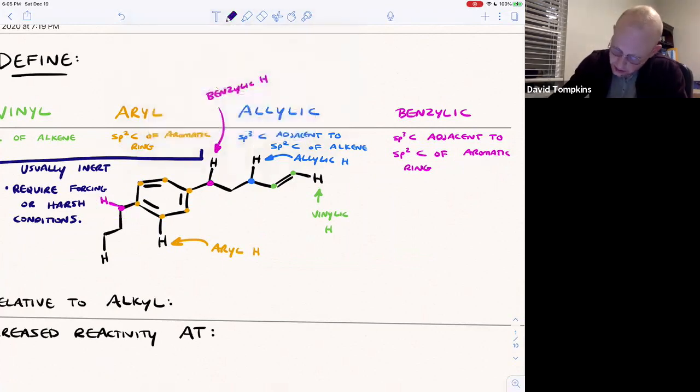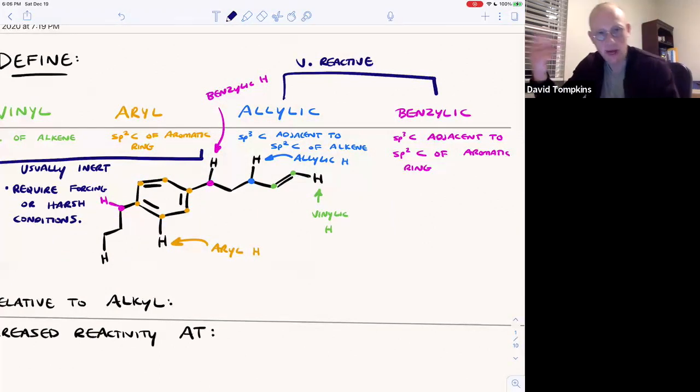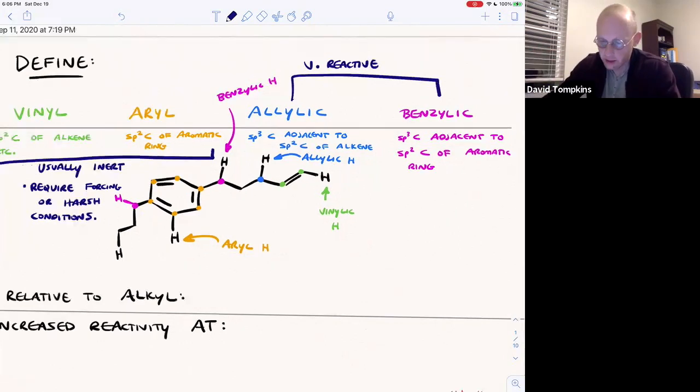So we'll find out soon that benzylic and allylic are very reactive. And it's often very easy to create radical, carbocation, or carbanion type intermediates at those positions, and it has to do with conjugation and delocalization.